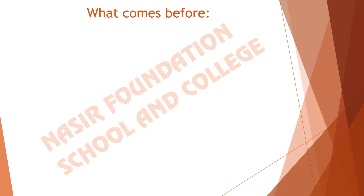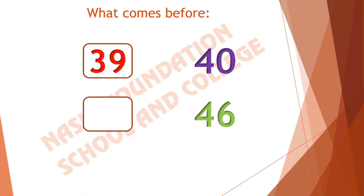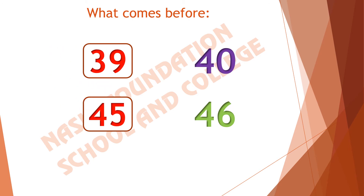Here we have a number 40. What comes before 40? The previous number is 39. Here we have 46. What comes before 46? Which number will come before 46? It is 45. If we subtract 1 from 46, we will get 45.